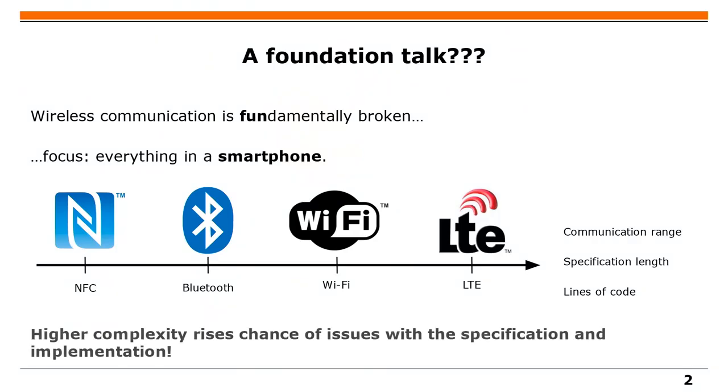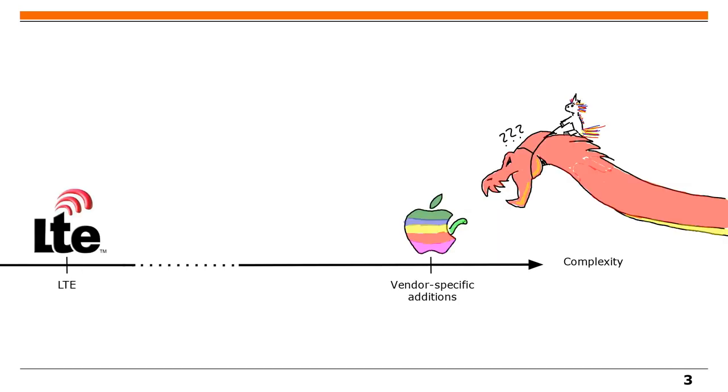Welcome to my talk. I thought it would first be a foundation talk, but it will also have new topics about everything that is fundamentally broken in wireless communication. It will cover anything in your smartphone: NFC, Bluetooth, Wi-Fi, LTE. You could order them by communication range, specification length, or lines of code. Specification length and lines of code also mean increased complexity, and increased complexity may lead to security issues. And then there is vendor-specific additions, which is even worse than LTE — that's when you open five instances of IDA trying to analyze where a wireless message is going.